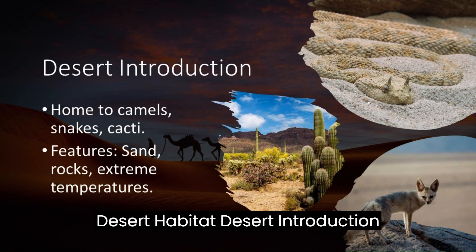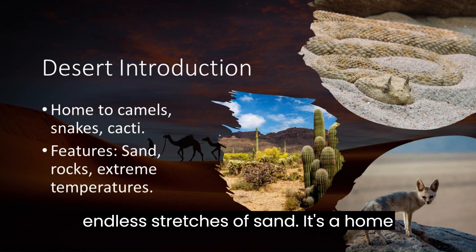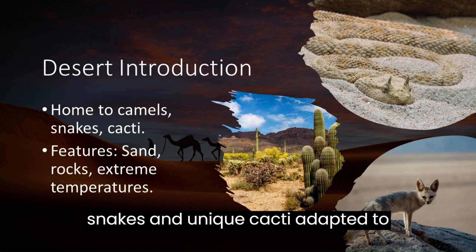Imagine a scorching hot desert with endless stretches of sand. It's a home for creatures like camels, slithering snakes, and unique cacti adapted to survive in this harsh environment.